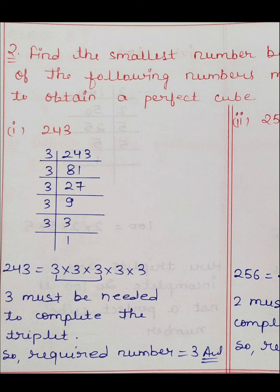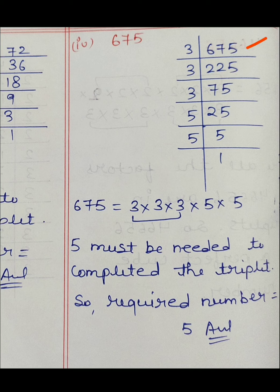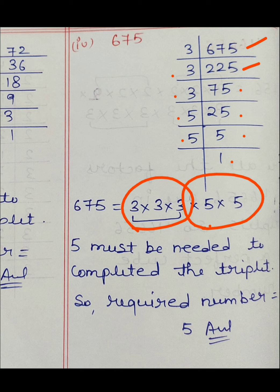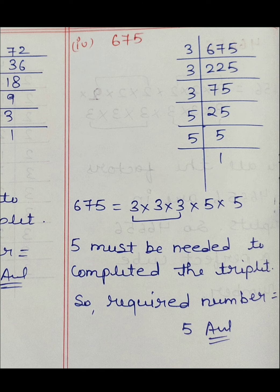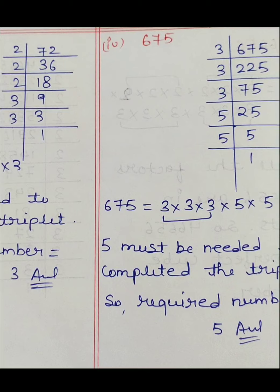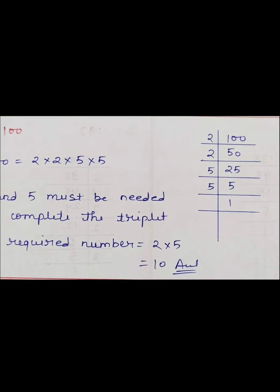Next is 675। 675÷3=225, 225÷3=75, 75÷3=25, 25÷5=5, 5÷5=1। 3 आया 3 times और 5 आया 2 times। 3 का triplet complete हो गया, लेकिन 5 का triplet incomplete है। 5 से multiply करने पर triplet complete हो जाएगा। 5 must be needed to complete the triplet, so required number is 5। 675 में 5 multiply करने पर perfect cube बन जाएगा।